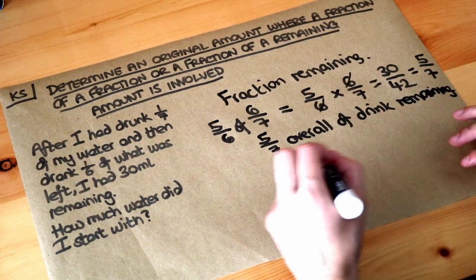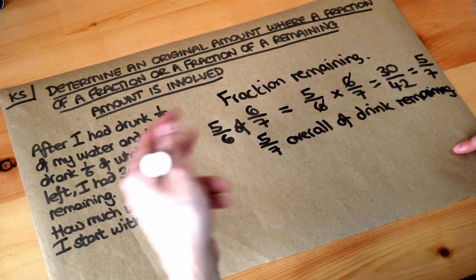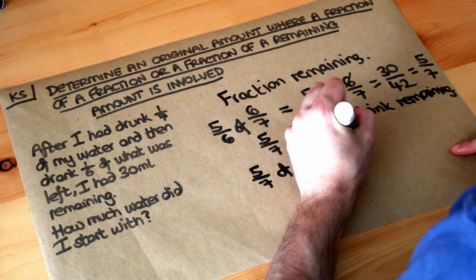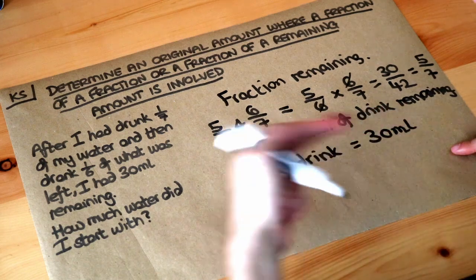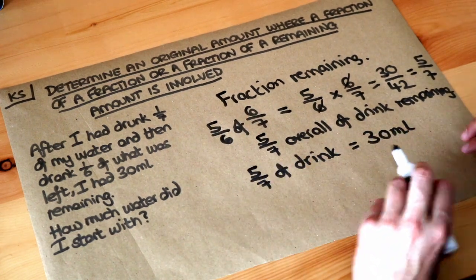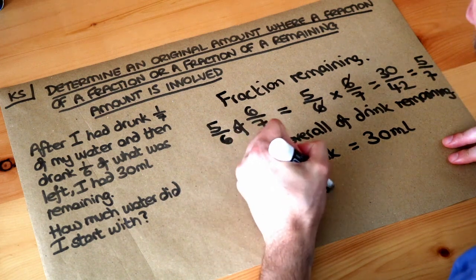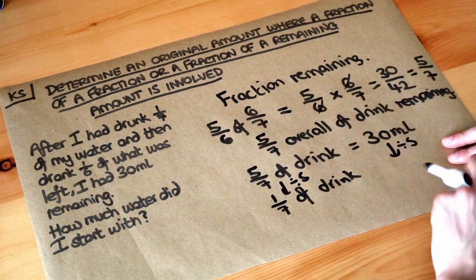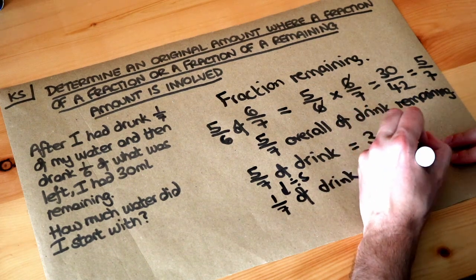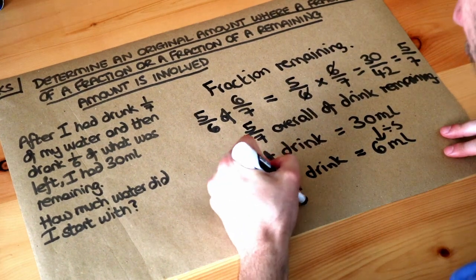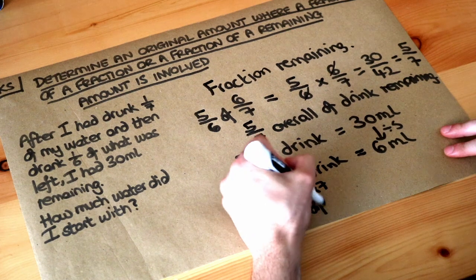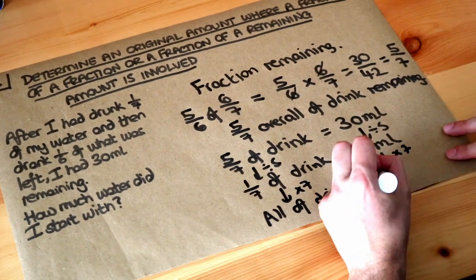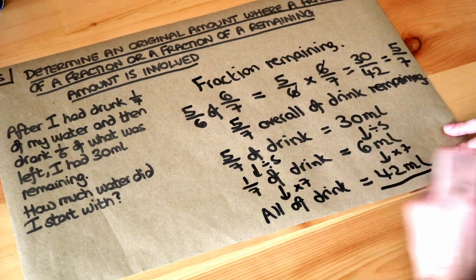Now we can use reverse fractions. We know that 30 millilitres is five-sevenths of the drink, so five-sevenths equals 30 millilitres. To find one-seventh, we divide by five: 30 ÷ 5 = 6, so one-seventh is 6 millilitres. To find the whole drink, we multiply by seven: 6 × 7 = 42. Therefore, the original amount of water was 42 millilitres.